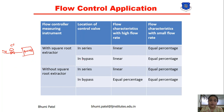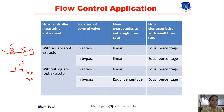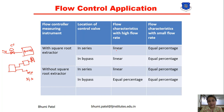We can also connect the control valve in a bypass connection. In bypass, if the same process produces two outputs — one important and one not required — we connect the control valve as a bypass. With a square root extractor and the control valve in series connection: for high flow rate, the characteristic is linear; for small flow rate, it is equal percentage.